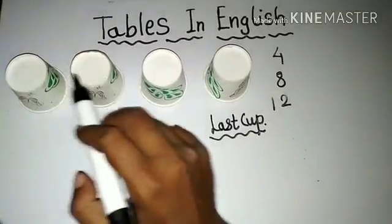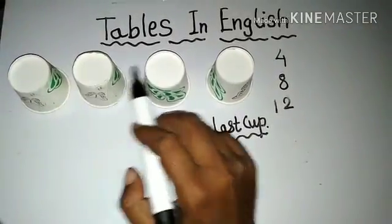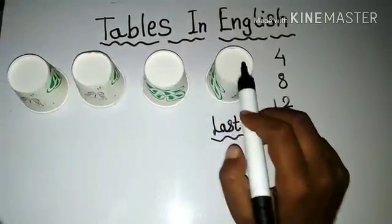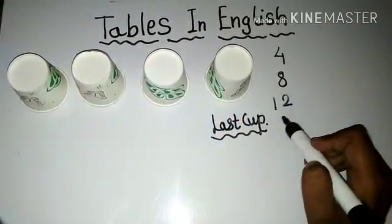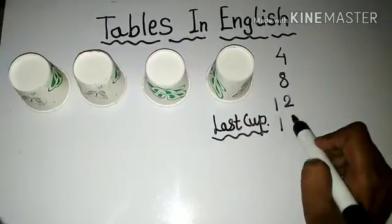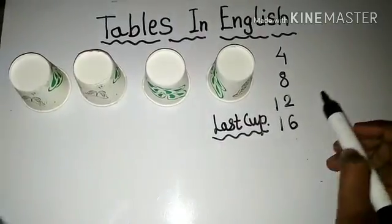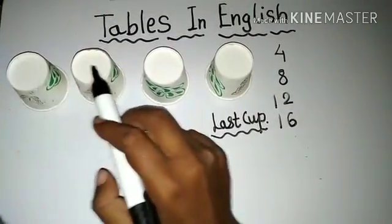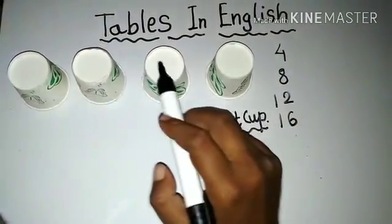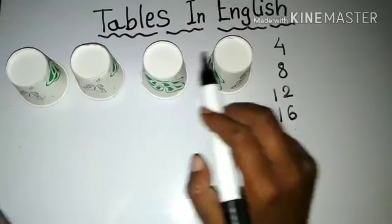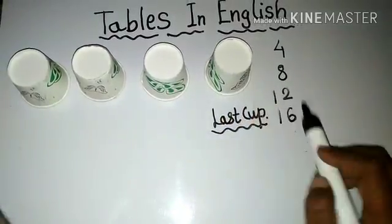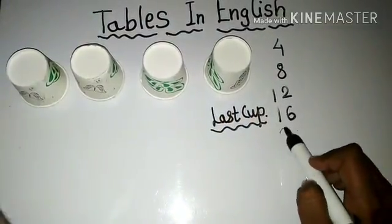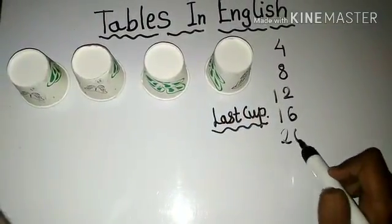Continuing: 13, 14, 15, 16 — you write down 16. Then: 17, 18, 19, 20 — so here comes 20.